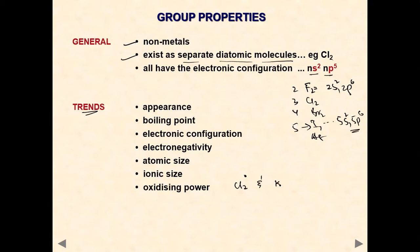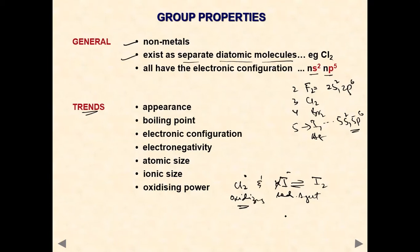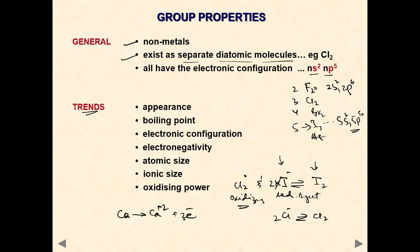Potassium iodide is a reducing agent, while chlorine is an oxidizing agent. To analyze the displacement reaction, we convert iodide minus into iodine — the iodide ion is oxidized. Metals like group 2 metals such as calcium are always electron donors, and non-metals are always electron acceptors. Calcium donates two electrons becoming Ca2+; loss of electrons is oxidation, which is why metals act as reducing agents.